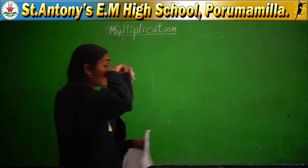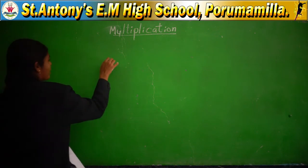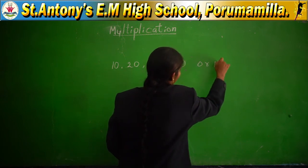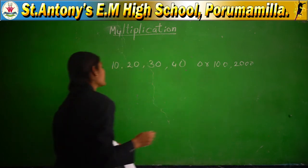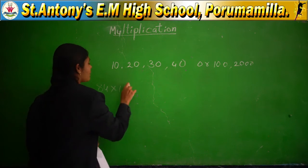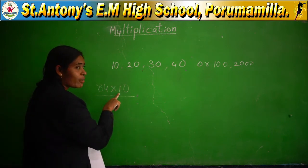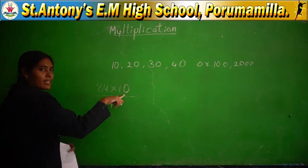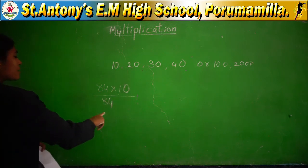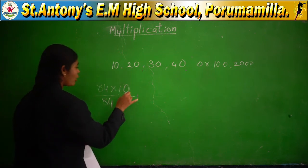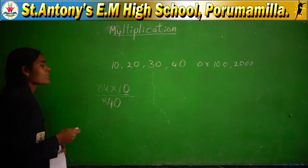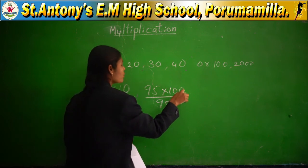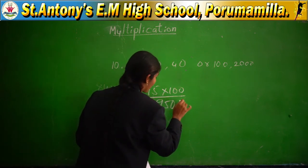Here is the easiest multiplication method — multiplying by 10, 20, 30, 40, 100, or 2000. Take 84 into 10: multiply by the valuable digit, which is 1, so 84 ones are 84. Then count the number of zeros in the multiplier — one zero — and add it to the right of the product. Result: 840. For 95 into 100, 95 ones are 95, and there are two zeros, so the answer is 9,500.